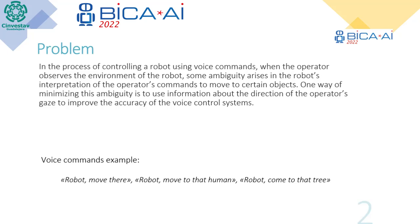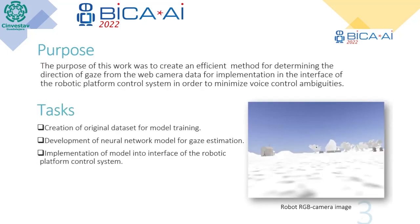The purpose of our work was to create an efficient method for determining the direction of gaze from web camera data, for implementation in the interface of a robotic platform control system, in order to minimize voice control ambiguities. We set the following tasks: creation of an original dataset for model training, development of a neural network model for gaze estimation, and implementation of the model into the interface of the robotic platform control system.